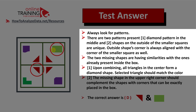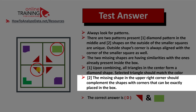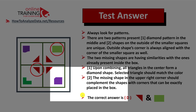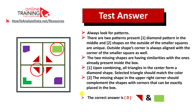Upon combining all triangles in the center, they form a diamond shape. For pattern two, the missing shape in the upper right corner should complement the corner shapes that fit exactly in the box — in this case a green rectangle. There is also a pattern of green color on the opposite side of the squares, the same as the purple colors on opposite sides. So the correct answer is choice D.